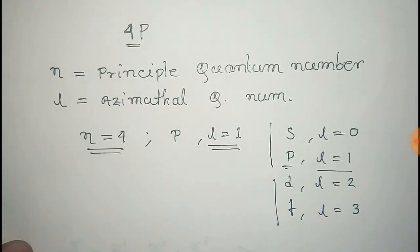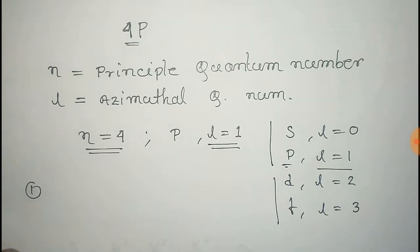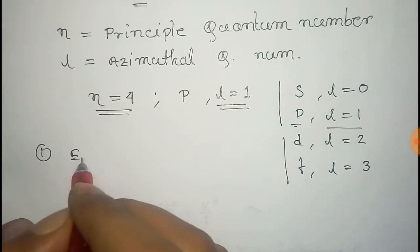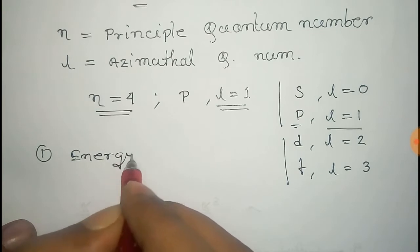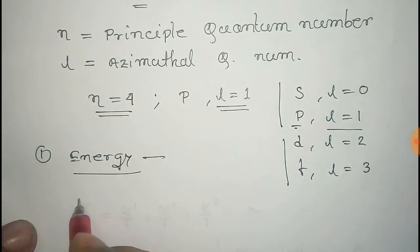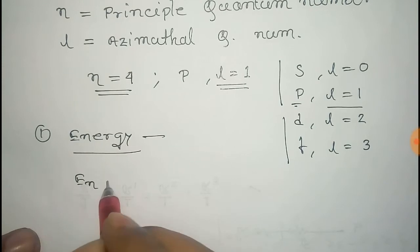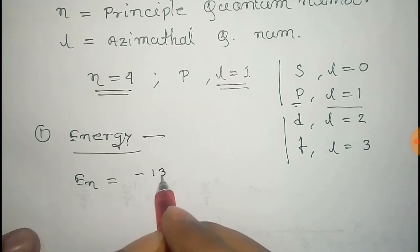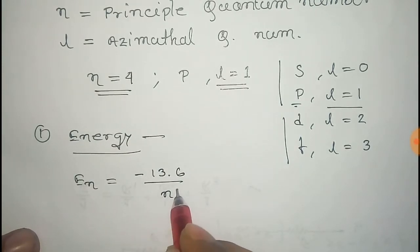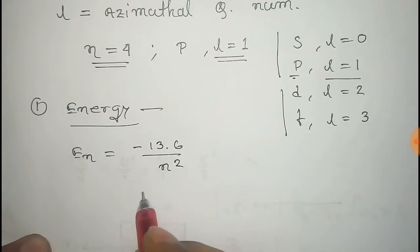Now you can get the energy and angular momentum using this data. First, the energy. We know that the energy at any principal quantum number is given by En equals minus 13.6 electron volts by n squared.